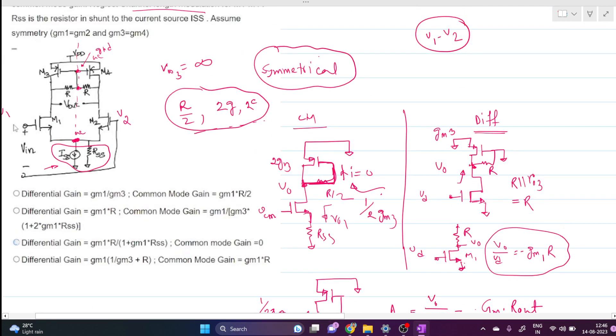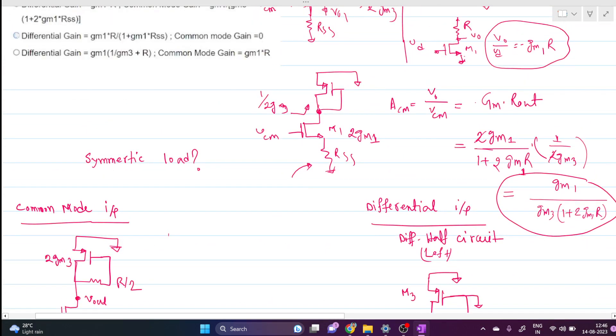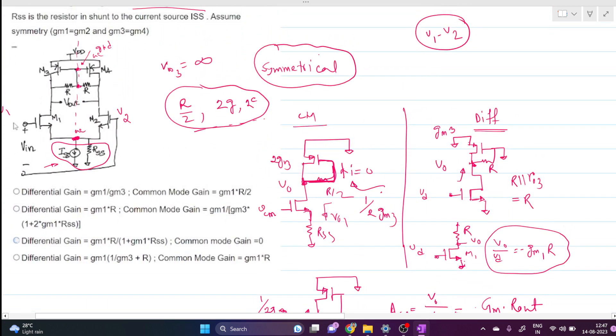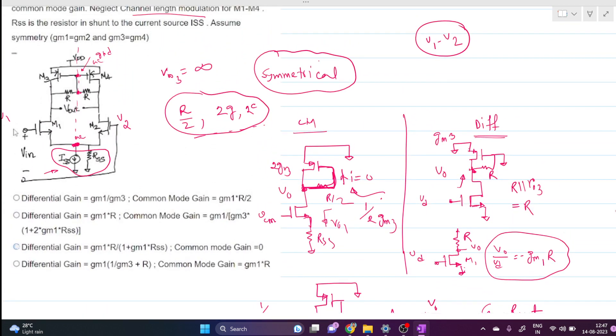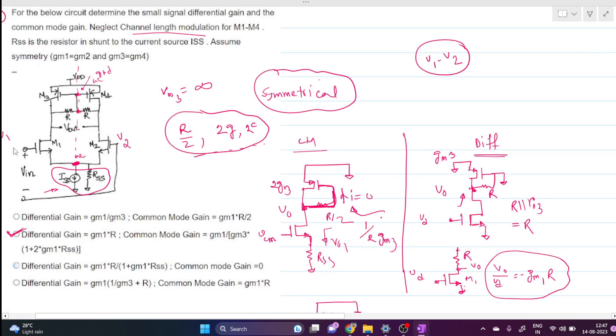This is our differential mode gain. As it is a common source configuration, there will be a negative sign. Looking at this question, our answer will be the second option. You can solve this circuit in this way. Thank you.